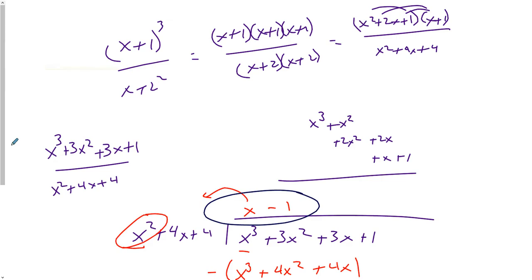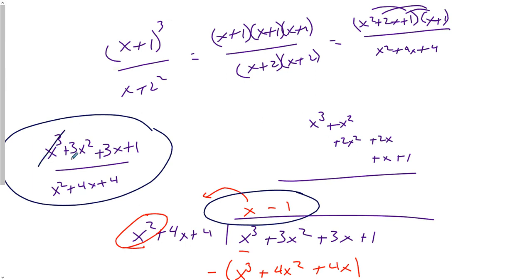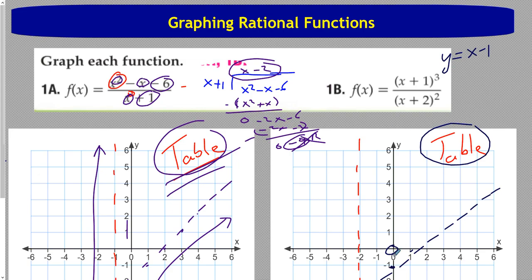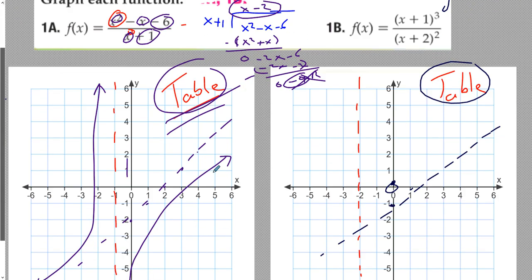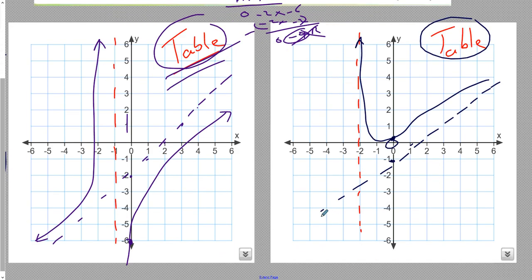The slant asymptote has a y-intercept of negative 1 and slope 1. Plugging in 0 to the original form gives 1 over 4, so we're at 1/4 at x equals 0. So we know the curve is coming in approaching from there. You should plug in two or three points to get a good curve — I'm going fast to keep the video short.